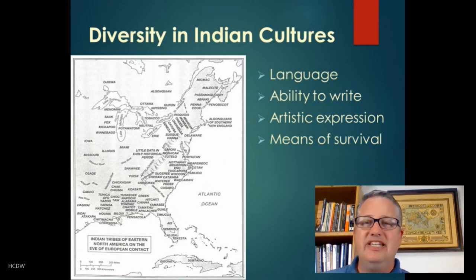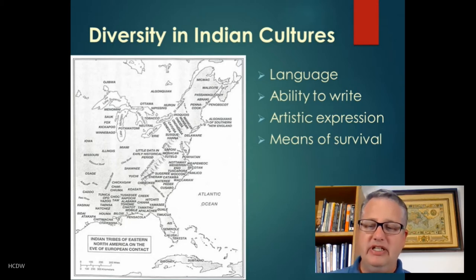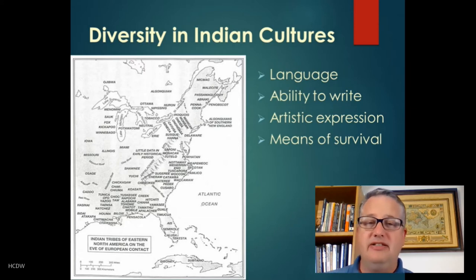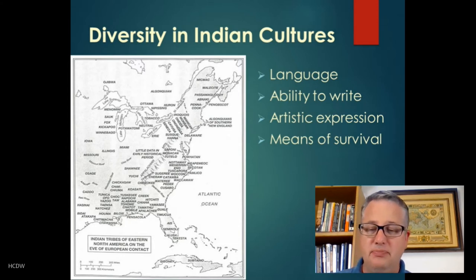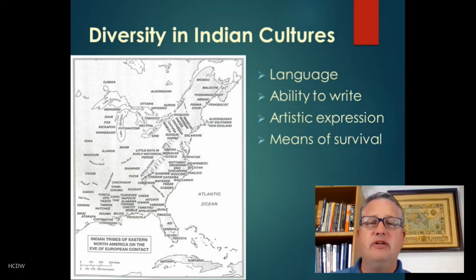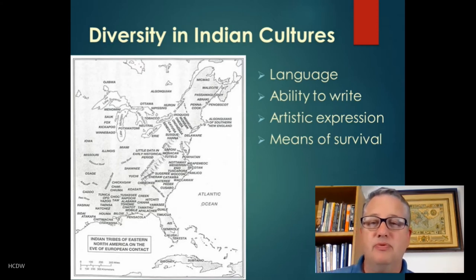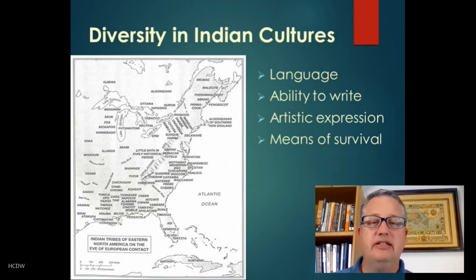Language was the key defining difference amongst these cultures. Related to that was the ability to write and different forms of communication. Some had developed fairly sophisticated written language along the lines of hieroglyphics of the ancient Egyptians, while others had no ability to communicate through written language. Artistic expression varied widely across these different societies, along with means of survival — whether they survived by hunting, by farming, or some combination of both.